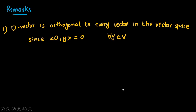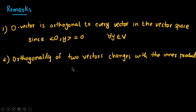An important remark: the zero vector is orthogonal to every vector in the vector space, because whenever we calculate the inner product against the zero vector it always gives zero. Another important point is that orthogonality changes with the inner product.